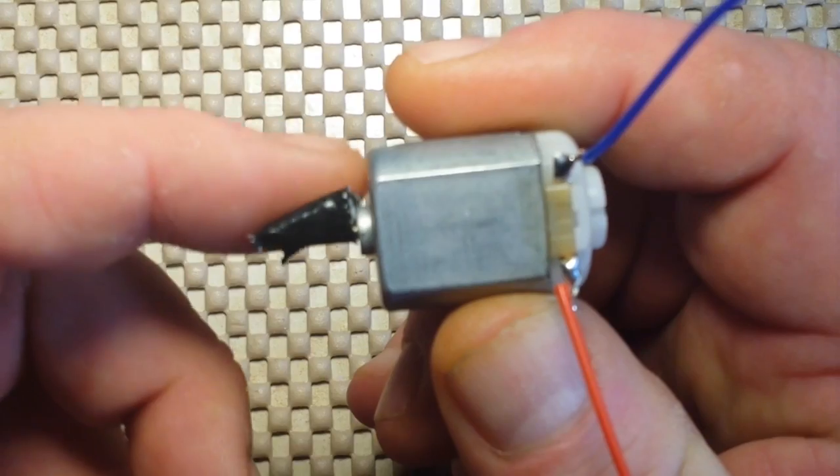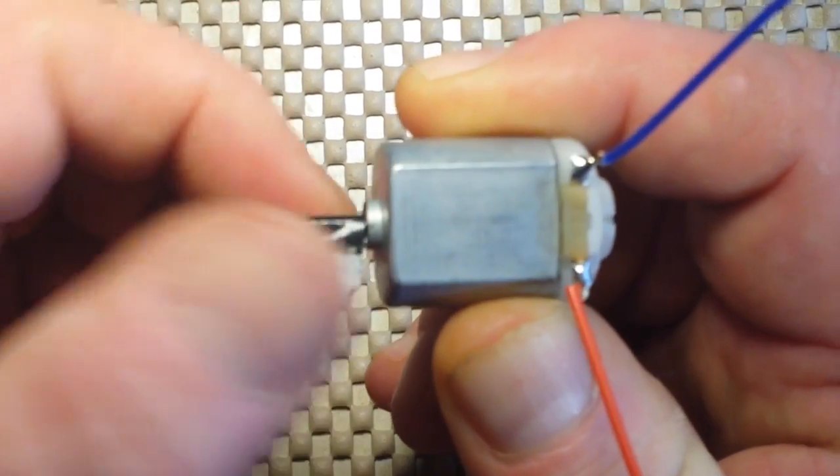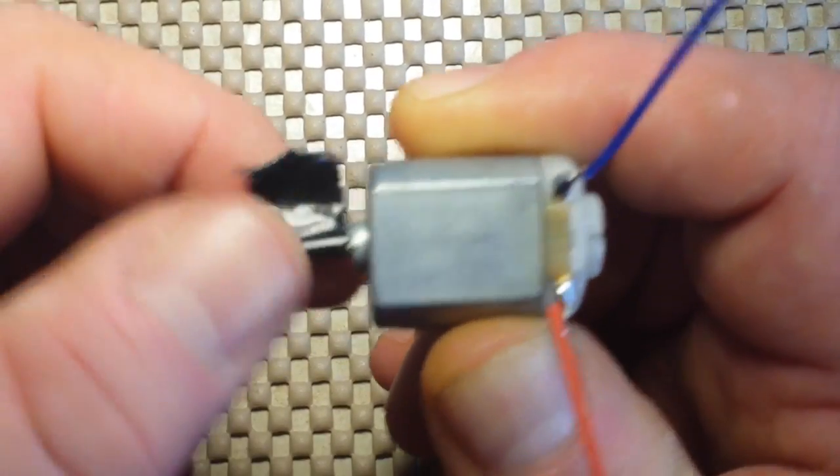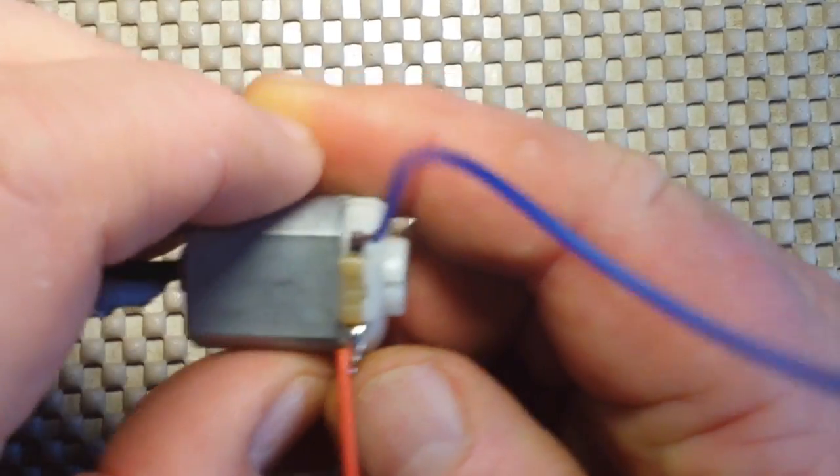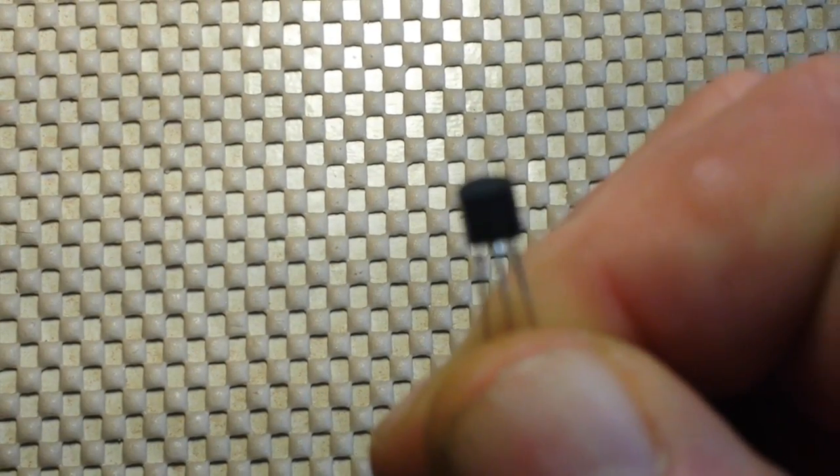So how to do that? Well, it is going to involve a transistor. Actually, it's going to involve four transistors for each motor in a circuit like this called an H-bridge.